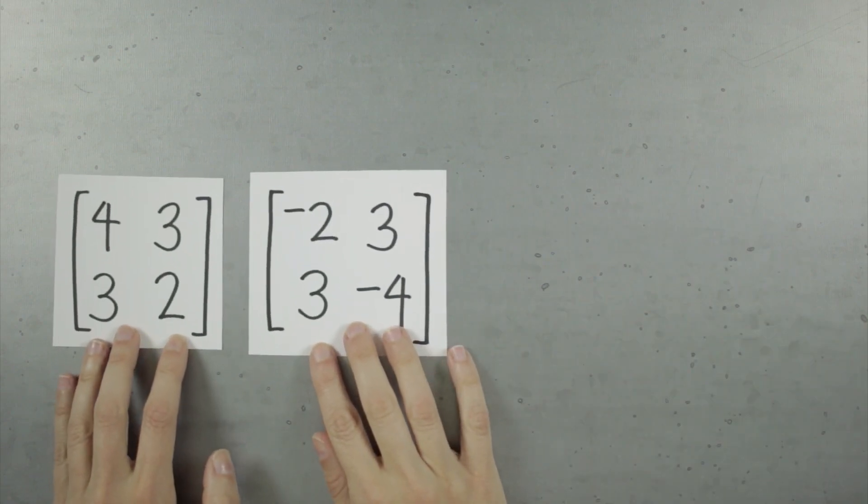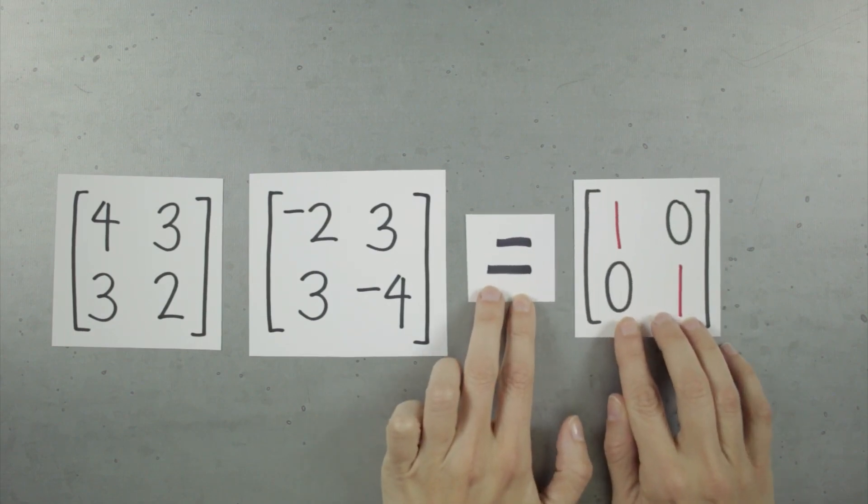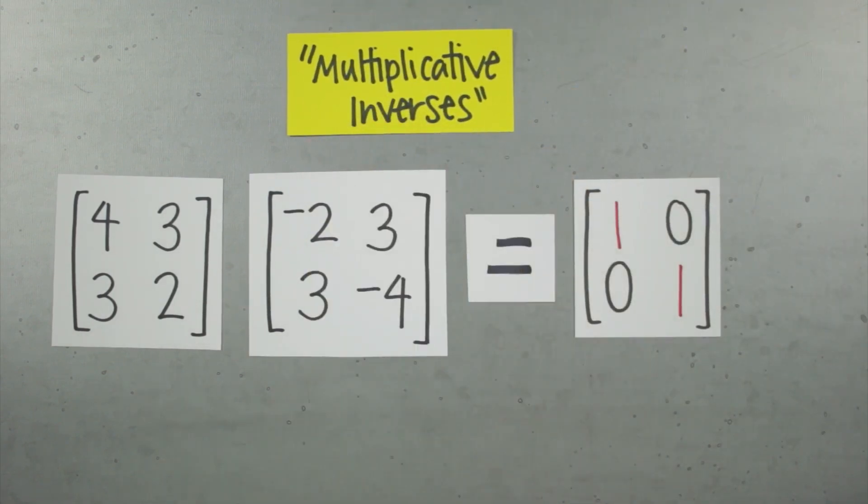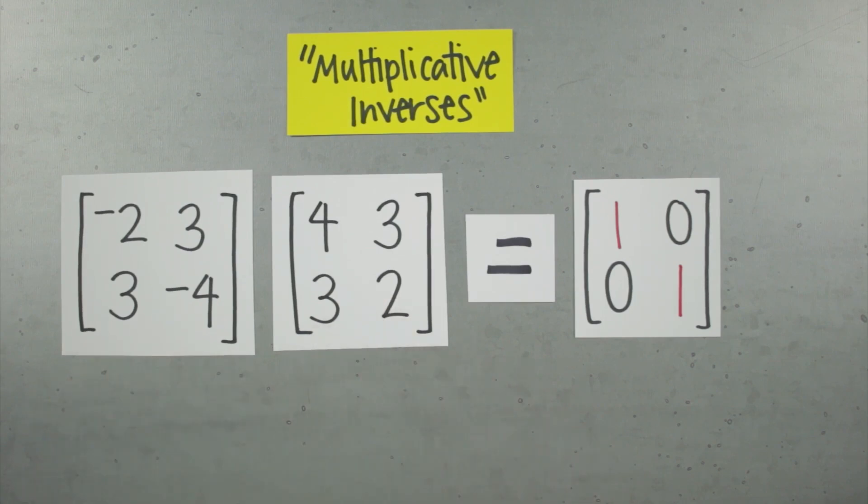If we multiply two matrices together, and we end up with an identity matrix as a result, it means those two matrices are what we call multiplicative inverses of each other. Not all matrices have a multiplicative inverse, but here's an example of multiplicative inverses. Multiplicative inverses can be multiplied in either order, and you'll still get an identity matrix.